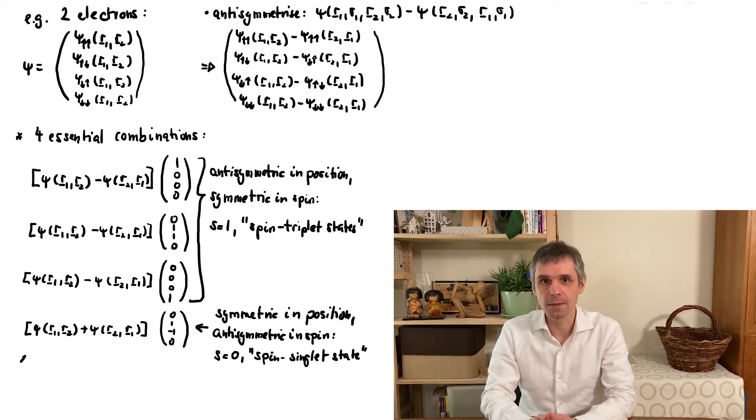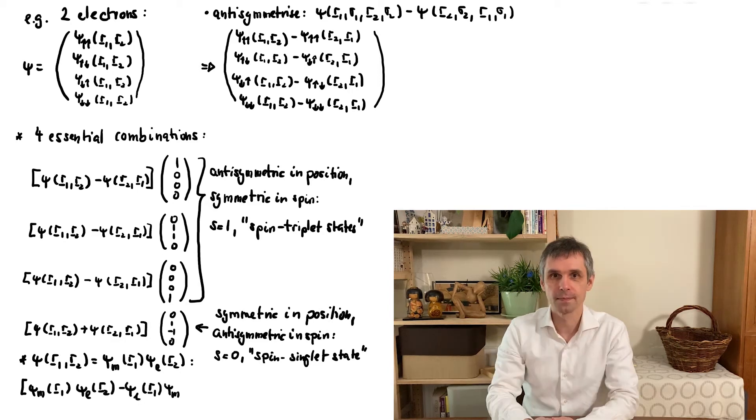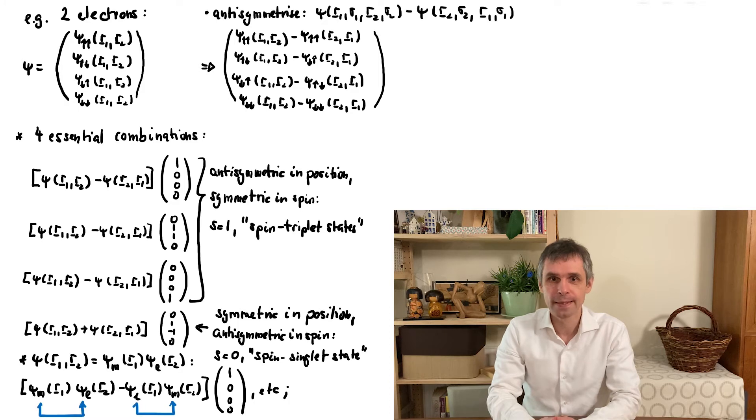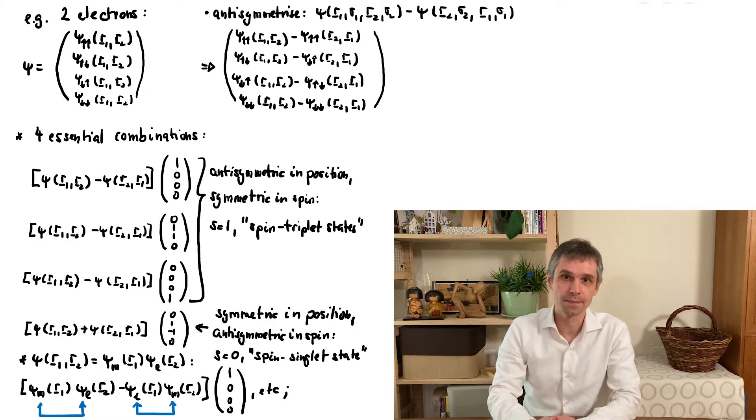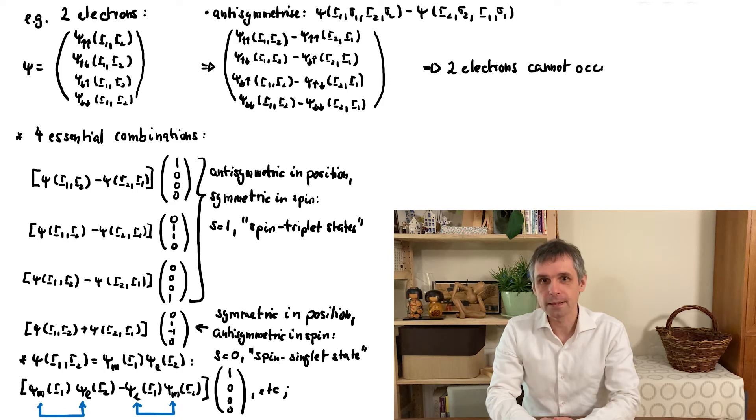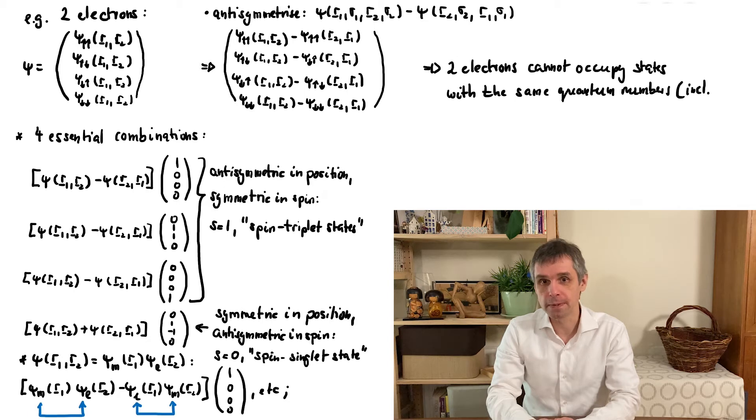Secondly, to go one step further, we assume that the position-dependent part separates in the same way as we proceeded in the previous chapter when we built up the basis of a composite system. Then we can write the triplet and singlet states in the form specified here. Now we note that we can formulate the Pauli exclusion principle not just with respect to the labels of the particles, but also in terms of the labels of these single particle states. In the spin triplet states, where the spins of the particles are indistinguishable, the two single particle states cannot have the same labels. Previously we called such labels quantum numbers. With this insight, we are led to Pauli's original form of the exclusion principle: two electrons cannot occupy states with the same quantum numbers, where we include the spin as one of these quantum numbers.